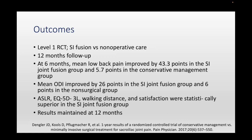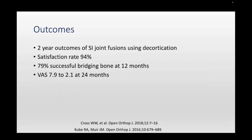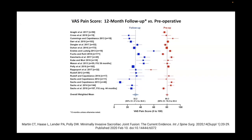Dr. Cross's paper is excellent — using a system that allowed decortication of the joint, they also looked at the incidence of bridging bone, which other transfixing studies didn't assess. They found almost 80% success in finding bridging bone — true radiographic fusion at 12 months. The meta-analysis published by Dr. Pauli's group showed significant improvement in VAS and ODI at 12 months versus pre-op.